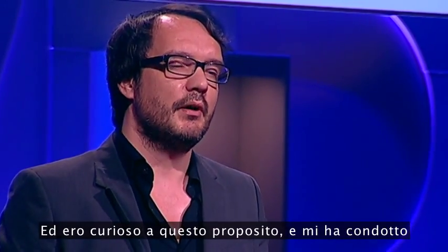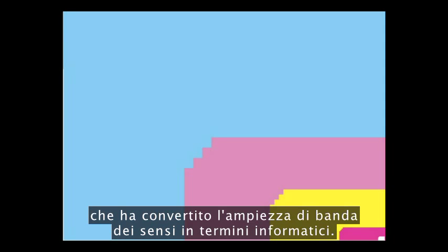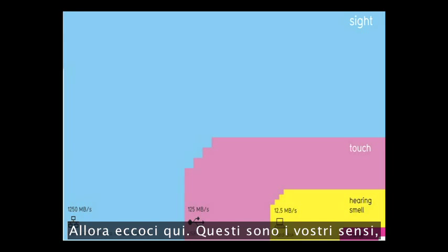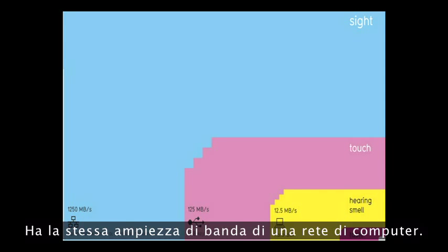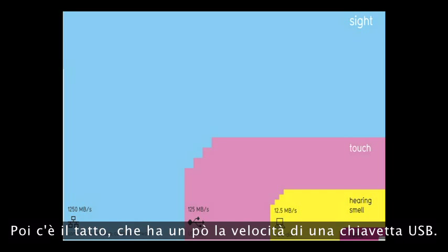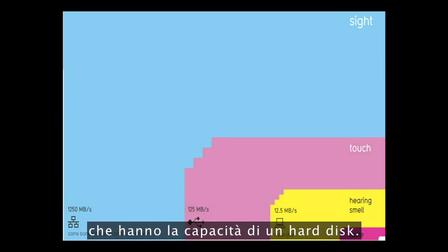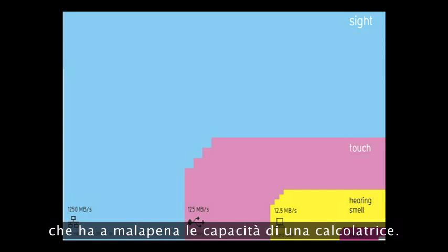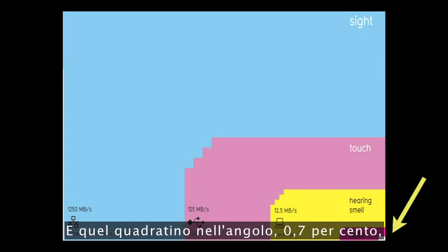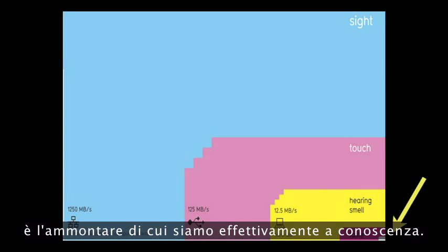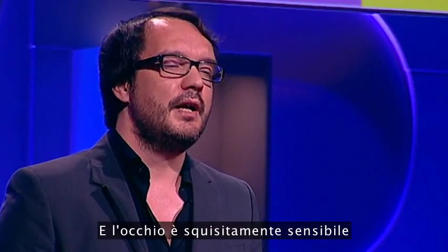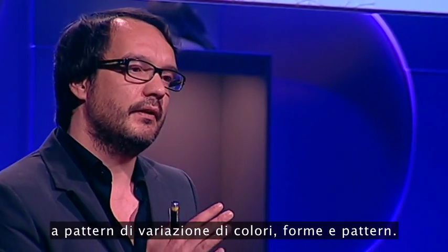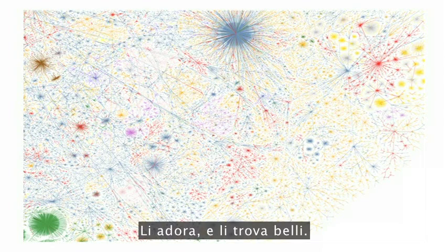It's like coming across a clearing in the jungle. And I was curious about this, so it led me to the work of a Danish physicist called Tor Noritrandes, who converted the bandwidth of the senses into computer terms. Your sense of sight is the fastest — it has the same bandwidth as a computer network. Then you have touch, which is about the speed of a USB key. Then you have hearing and smell, which is the throughput of a hard disk. And then poor old taste, which is like barely the throughput of a pocket calculator. That little square in the corner — 0.7% — is the amount we're actually aware of. And the eye is exquisitely sensitive to patterns in variations in color, shape and pattern.